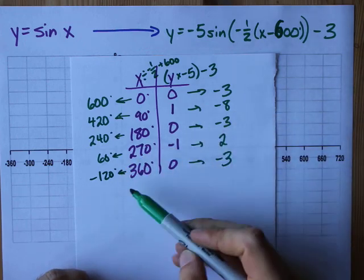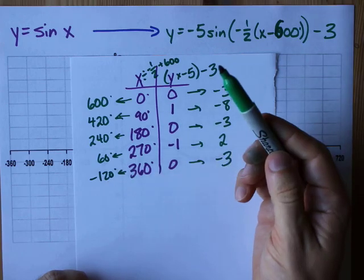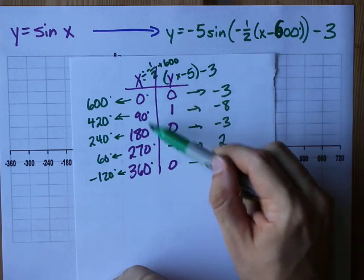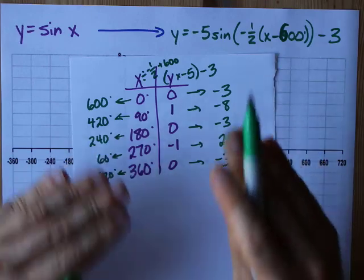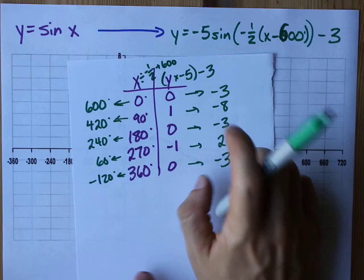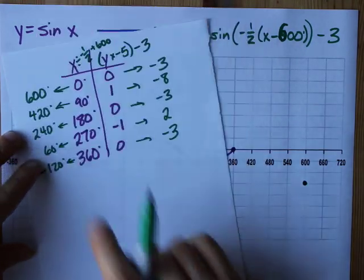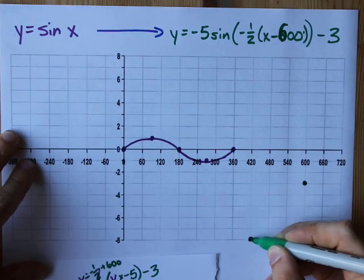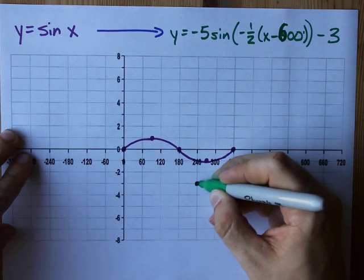Now, what you might notice is that these started at positive 600, and they were going down by 180 each time. That 180 is the stretched version of this difference of 90 that we had picked. Anyways, this is the way that it is. I'm going to plot these points and we'll have our transform function right off the bat. 600 comma negative 3. 600 comma negative 3, check. 420 comma negative 8, 420 comma negative 8. 240 comma negative 3, 240 comma negative 3.